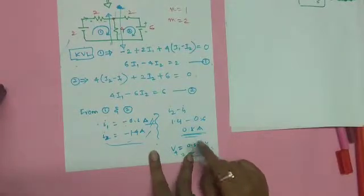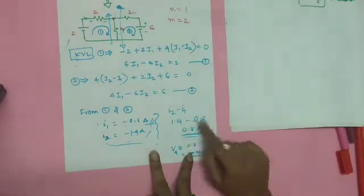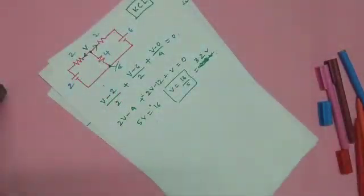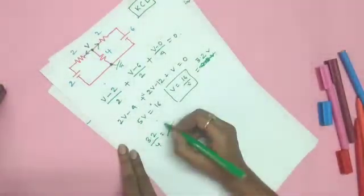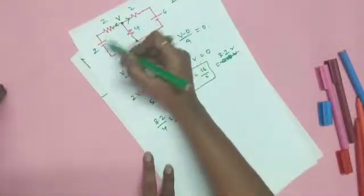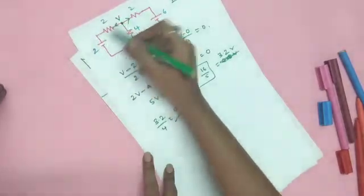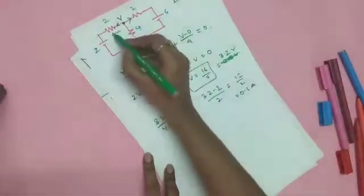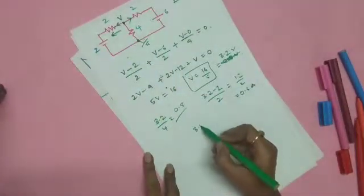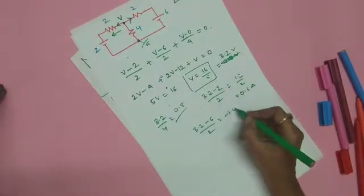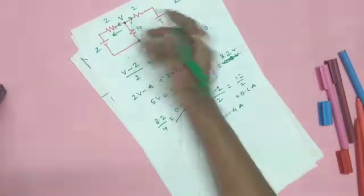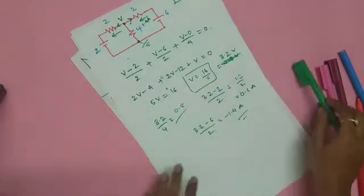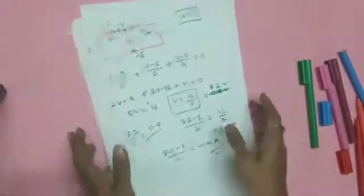We can verify: the voltage across the 4-ohm resistance is V = 3.2 V, and the current through it is 3.2/4 = 0.8 amps — matching our mesh analysis result. The current through the first branch is (V − 2)/2 = (3.2 − 2)/2 = 1.2/2 = 0.6 amps. The current through the other branch is (V − 6)/2 = (3.2 − 6)/2 = −1.4 amps, meaning 1.4 amps flows in the opposite direction. Both methods yield consistent results.